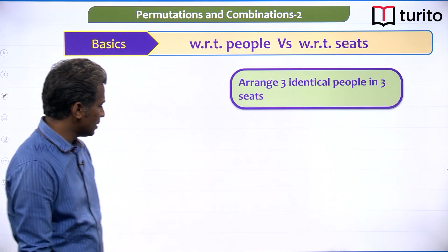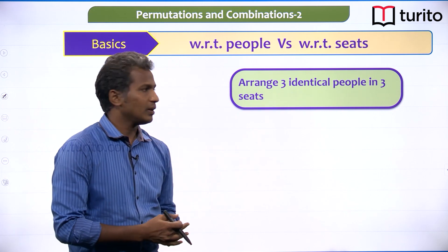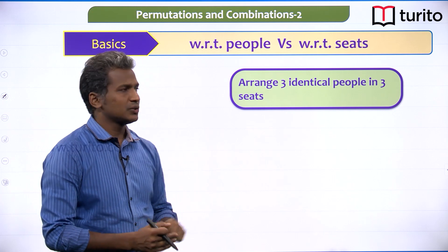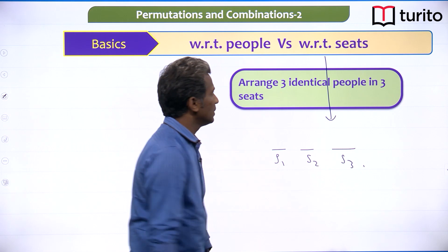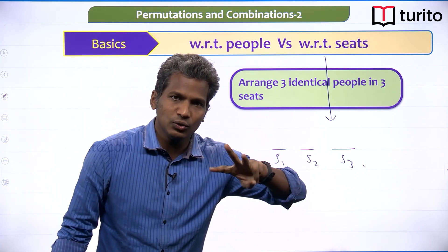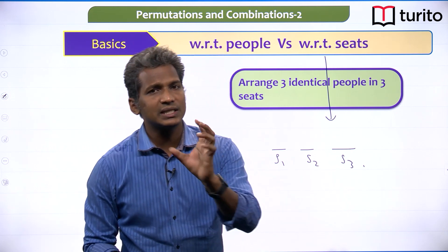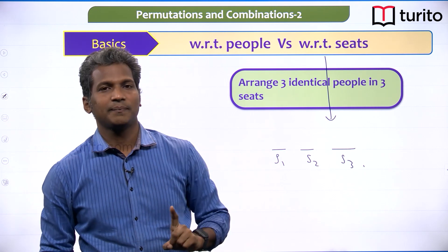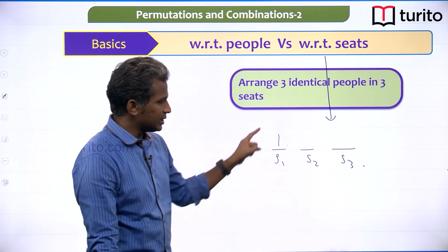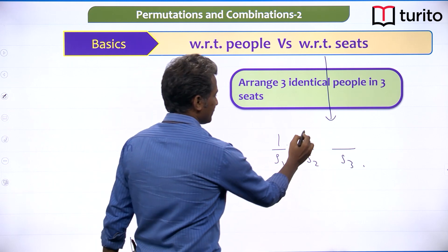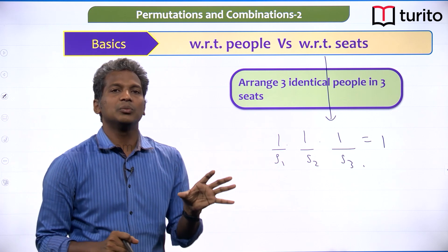Consider arranging 3 identical people in 3 seats. With respect to seats: seat 1 sees all three people as identical, so it has only 1 choice; seat 2 also has 1 choice; seat 3 has 1 choice. So the answer is 1 way. If you calculate with respect to people, you might get 3 factorial = 6, which is wrong. Since all three people are identical, every arrangement they make is symmetric, so you divide by 3 factorial — again giving 1.